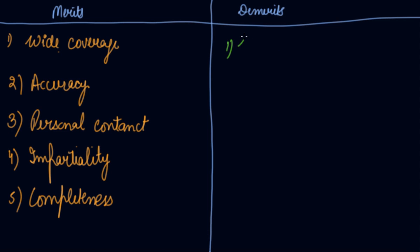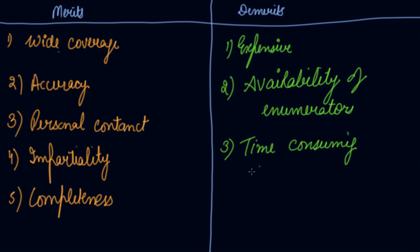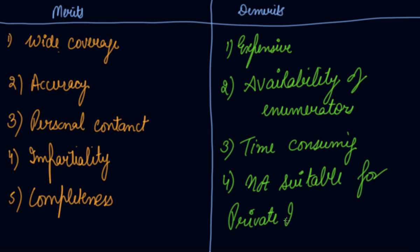The demerits of the enumerators method: first, it is expensive because enumerators must be appointed and go personally to collect information. Second, there is a problem in the availability of enumerators. Third, it is time consuming. Fourth, it is not suitable for private investigation where the investigation has to be kept secret. These are the merits and demerits of the enumerators method.